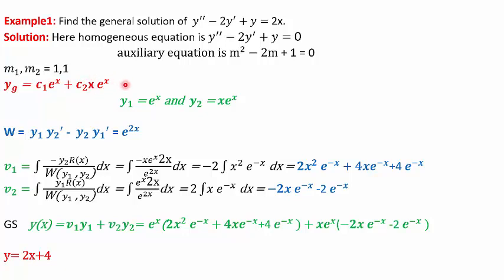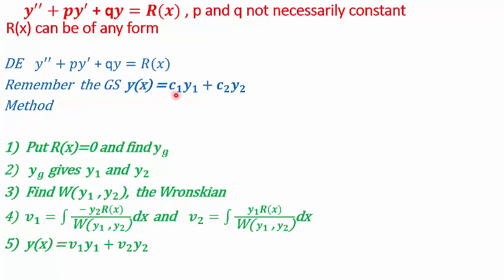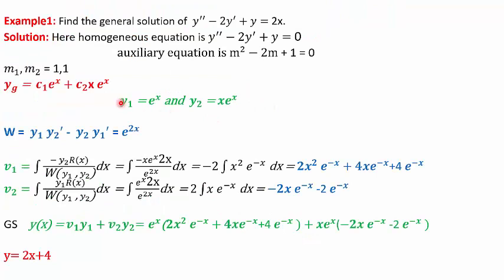We have compared it to the general solution c1·y1 + c2·y2 to identify y1 and y2. Once we have y1 and y2, we find the Wronskian W = y1·y2' − y2·y1'. Differentiating y1 and y2 and substituting into the formula gives W = e^(2x). Now, v1 is the integral of −y2·r(x)/W. Substituting y2 = x·e^x, r(x) = 2x, and W = e^(2x), we get the integral −2∫x²·e^(−x) dx.